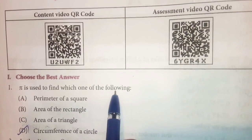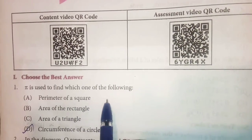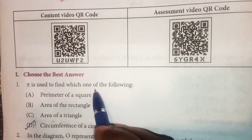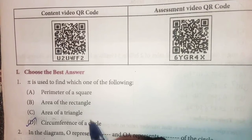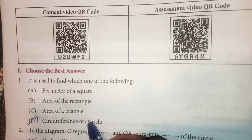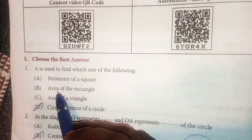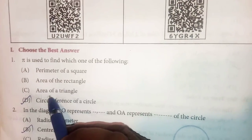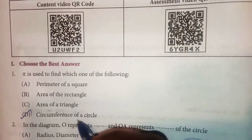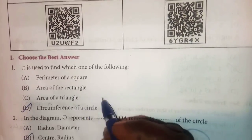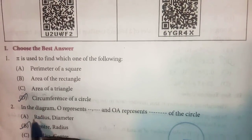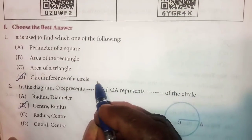Pi is used to denote the circumference of a circle. The options are: perimeter of square, area of the rectangle, area of a triangle, circumference of a circle. Pi is used to find the circumference of a circle, so option D is correct.